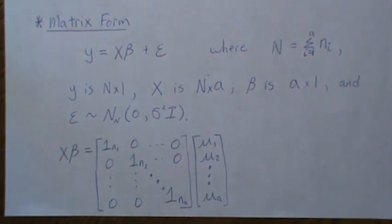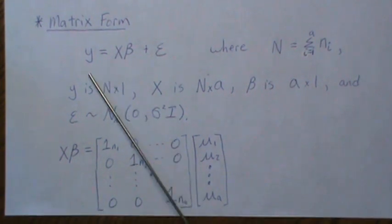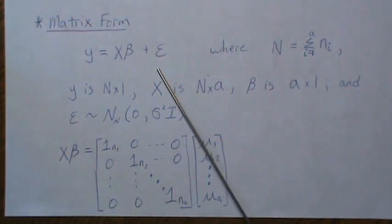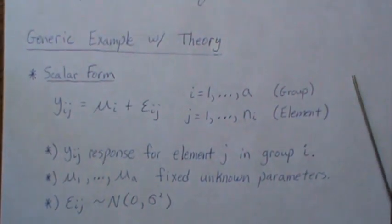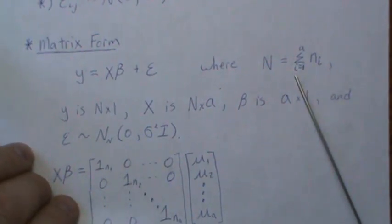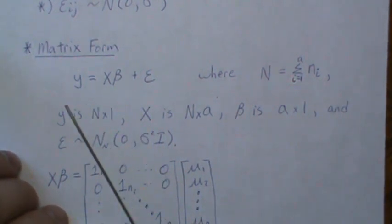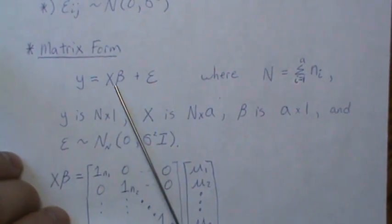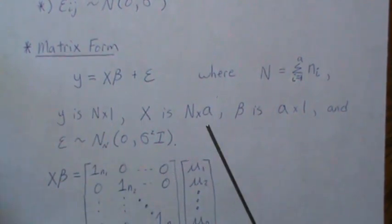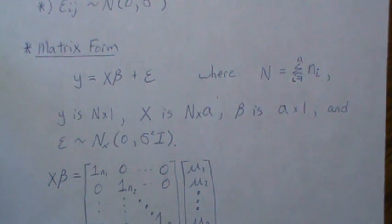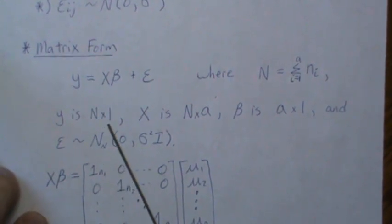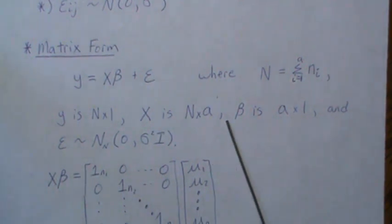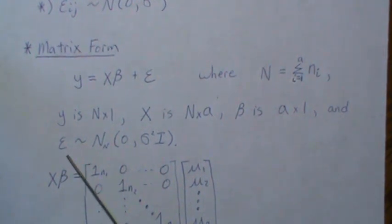It's much easier to talk about this in matrix form, so we'll do the theory in matrix notation. We have Y = Xβ + ε. The n_i are the group sample sizes, and if we add up all sample sizes for the a groups we call it capital N. Y is an N×1 vector, X is an N×a matrix, β is an a×1 vector, and ε is also an N×1 vector that is IID normally distributed.